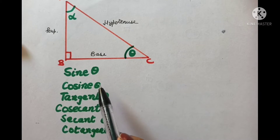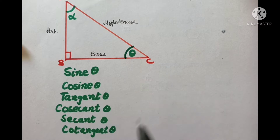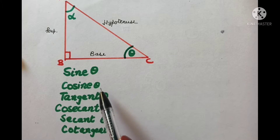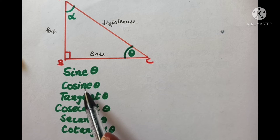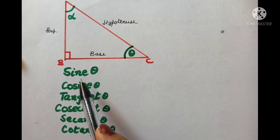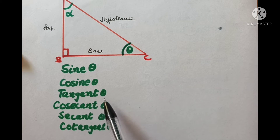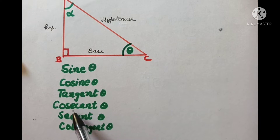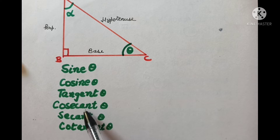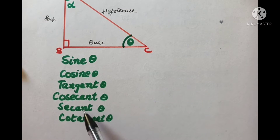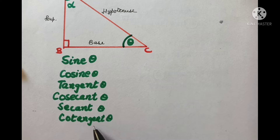The first trigonometric ratio is sine theta. Second is cosine theta — the word originates from 'complementary of sine'. Third is tangent theta. Fourth is cosecant theta — the word comes from 'complementary of secant'. And the next is secant theta and the last one is cotangent theta.